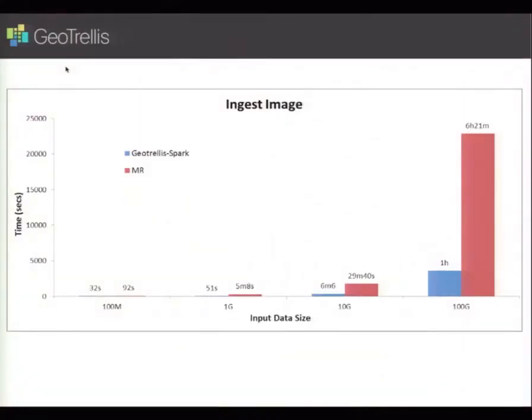We did benchmarking against DigitalGlobe's MapReduce-based system, and the results really blew it out of the water. The combination of GeoTrellis's internal data types and algorithms — optimized for single-threaded speed — combined with Spark provided a lot of performance. For the ingest step — taking 100 gigabytes of GeoTIFF files striped across an HDFS cluster, converting to the internal GeoTrellis data structure, tiling, and mosaicking — GeoTrellis Spark took one hour, while the MapReduce solution took over six hours.